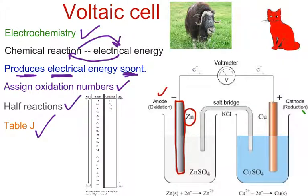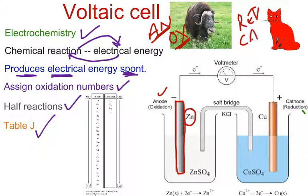A memory device that we learned was an ox, where at the anode, oxidation occurs. And the other memory device that we learned was red cat, which is simply saying reduction occurs at the cathode. So, we have the anode and cathode.